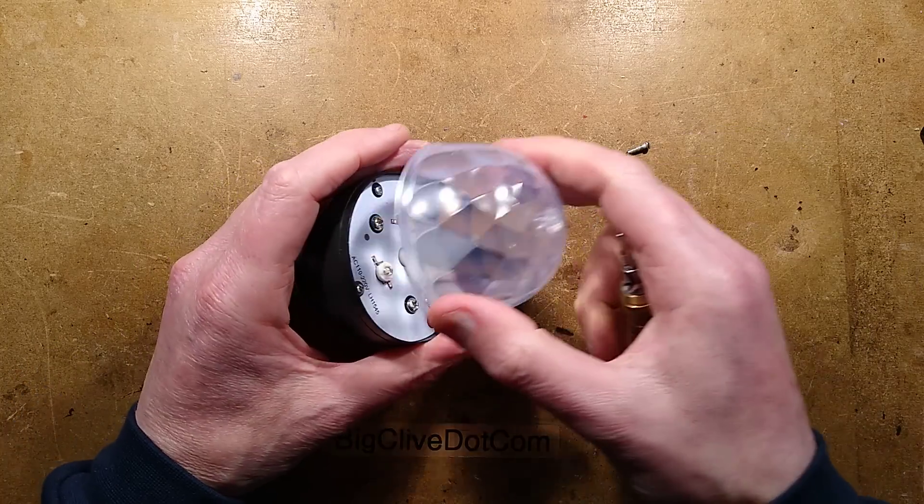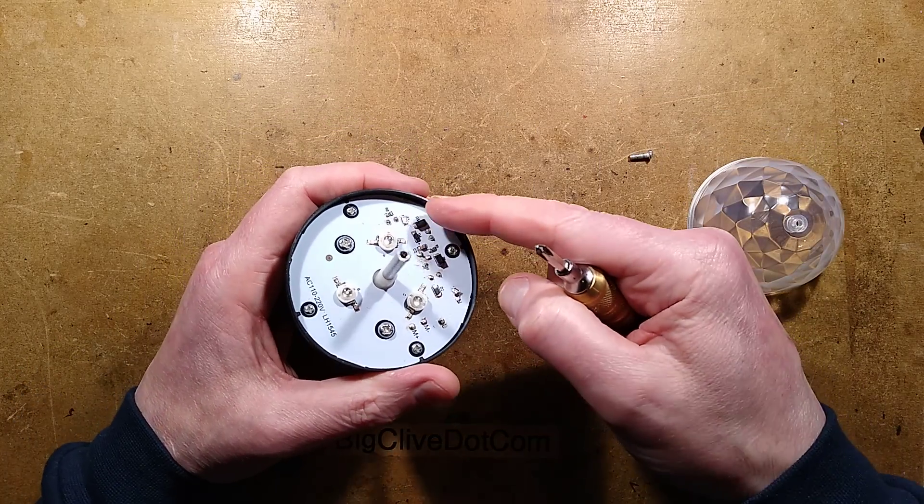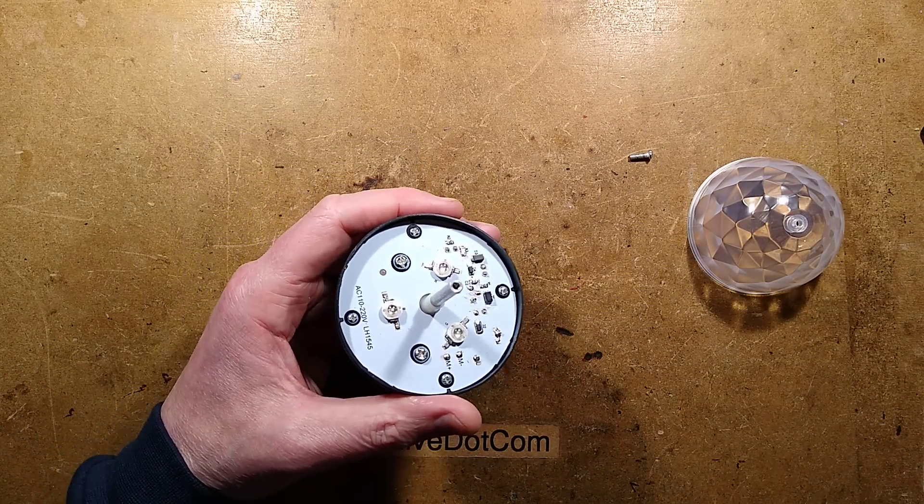Which is on a shaft that is connected to a little DC motor underneath. Now you can already see there's components on this circuit board. Let me zoom down a bit.